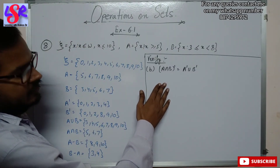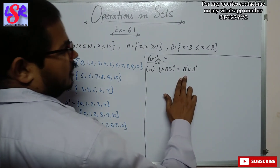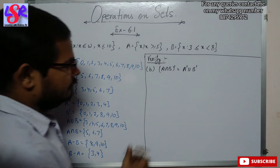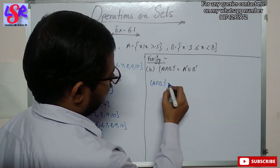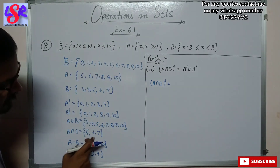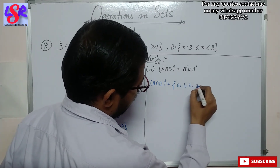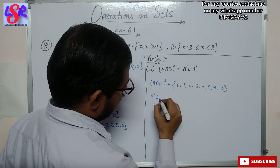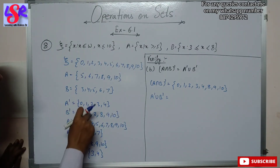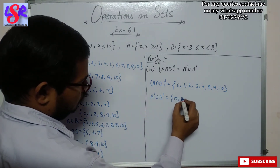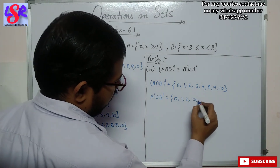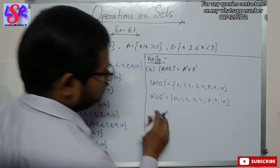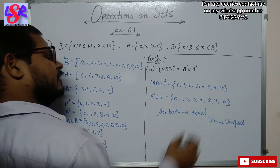Part B verifies (A intersection B) complement equals A complement union B complement. A intersection B = {5,6,7}, so its complement is {0,1,2,3,4,8,9,10}. A complement union B complement combines {0,1,2,3,4} and {0,1,2,8,9,10}, giving {0,1,2,3,4,8,9,10}. Both are equal, hence verified.